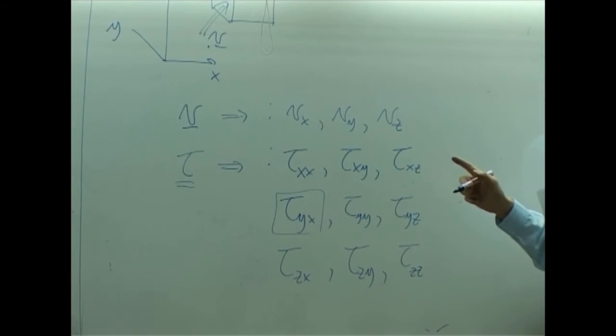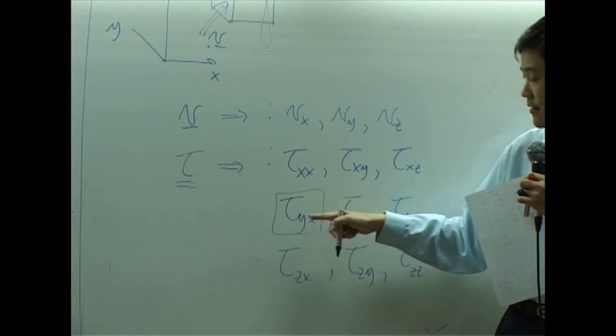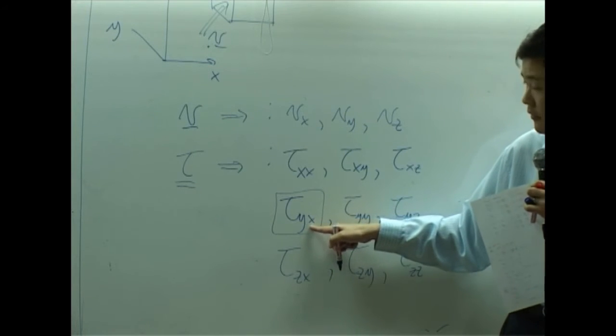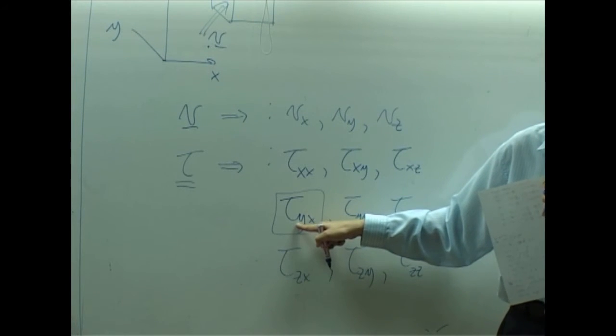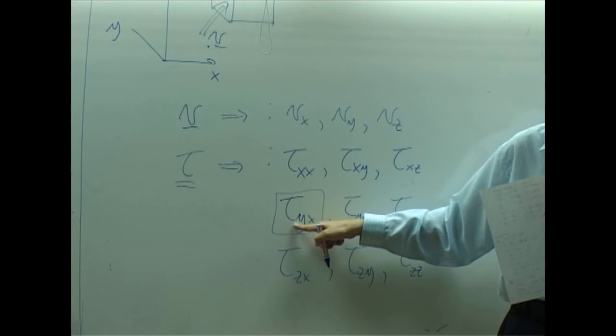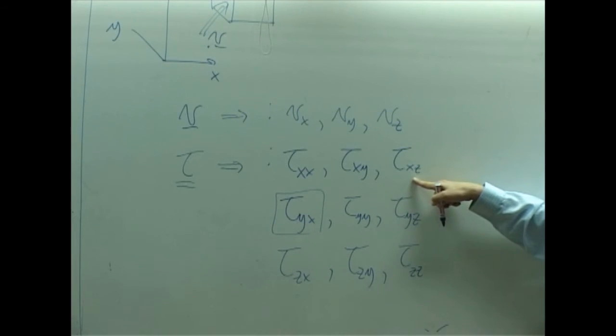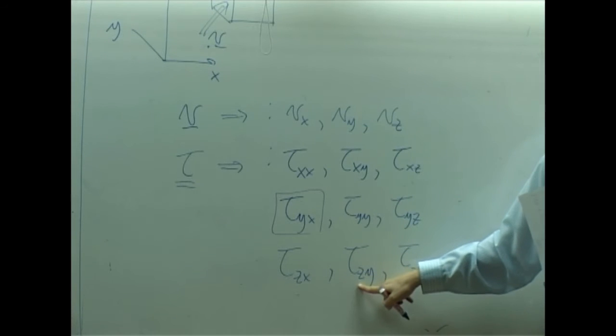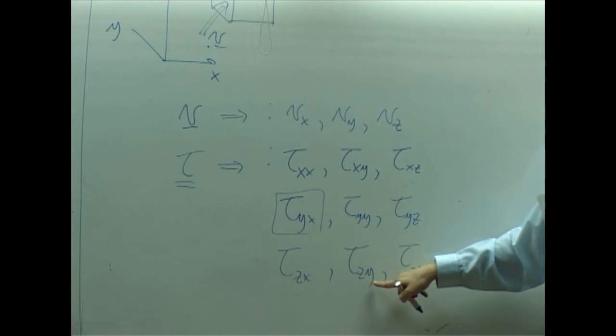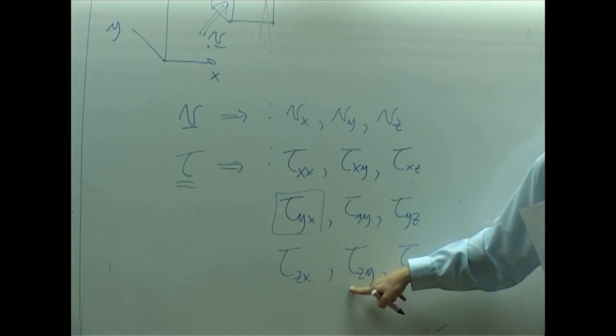These are nine components of the tensor. We just talked about tau_yx. By its definition, it means x momentum transfer in y direction. So what is tau_xz? It means z momentum transfer in x direction. How about tau_zy? That's y momentum transfer in z direction. Did you get that?